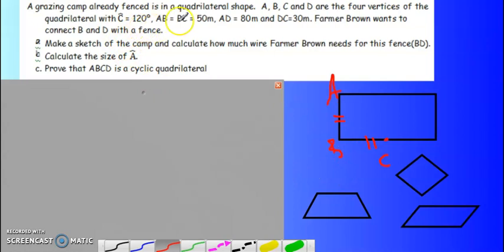That one was the 50. AB and BC is the same length. Then it tells me angle C has an angle of 120 degrees. And then I have got AD equal to 80 and I have CD given as 30.